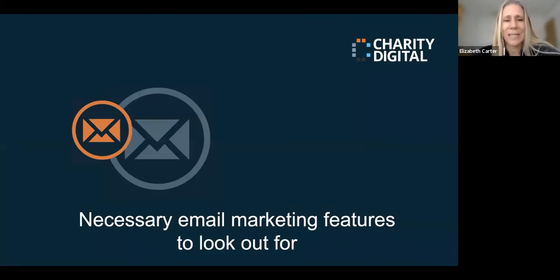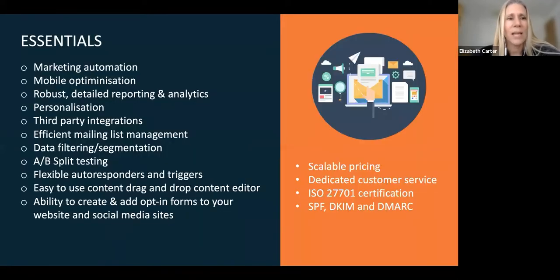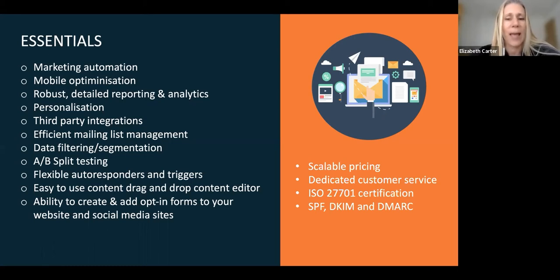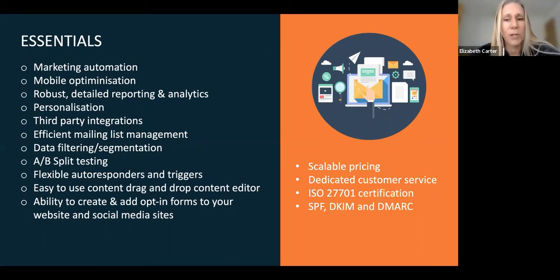Now let's look at the necessary email marketing features to look out for. Marketing automation is a powerful tool — it lets you send the right message to the right person at the right time using workflows. It has the ability to trigger emails to subscribers with relevant information, and it's really useful for charities. It allows you to trigger a series of emails based on your audience's behavior over a period of time. Automated emails show over 119% higher click rates than broadcast emails.